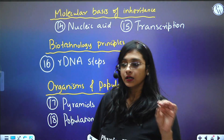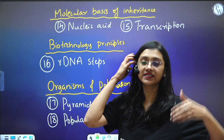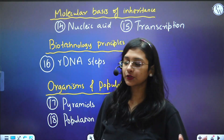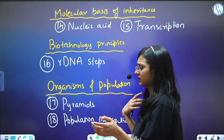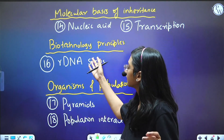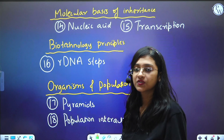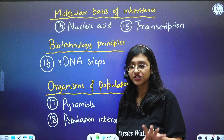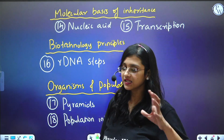Biotechnology has two chapters. Under Principles and Processes, what is important are all the steps of rDNA technology — not just the names, but also what happens at each step, the different types of vectors, and their examples. For Biotechnology and its Applications, the entire chapter is important, though specific topics vary from year to year.